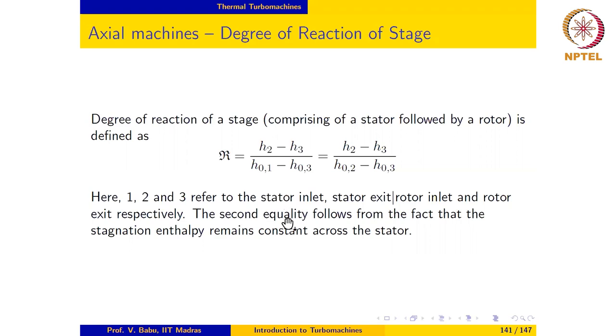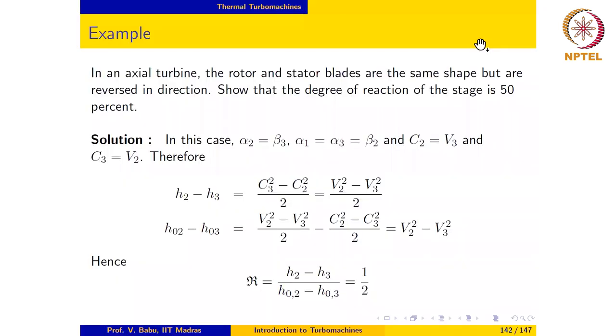Let us look at a couple of examples to illustrate how we calculate the degree of reaction for a stage. The first example reads: In an axial turbine, the rotor and stator blades are the same shape but are reversed in direction. Show that the degree of reaction of the stage is 50 percent.